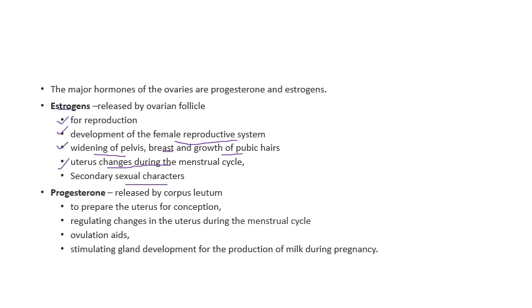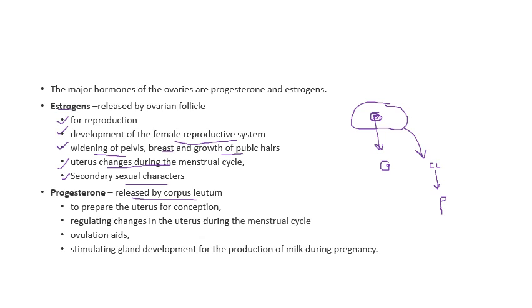Next, if we talk about progesterone — progesterone is released by the corpus luteum from inside the ovary. There is a structure called the Graafian follicle, inside which the ovum is present. When the ovum is released from it, the remaining structure is converted into corpus luteum, which releases the hormone called progesterone.